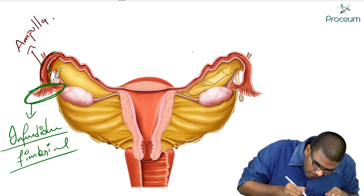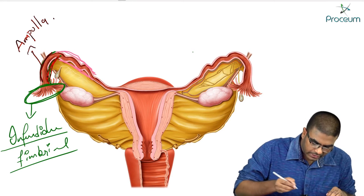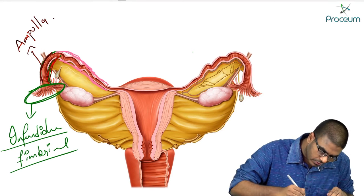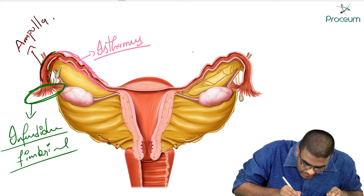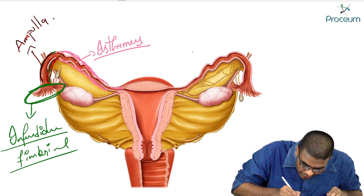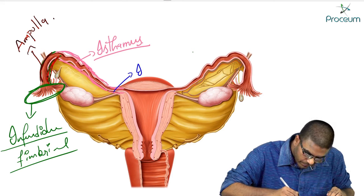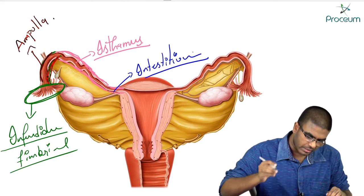Next, we have the next region — this part of the fallopian tube is known as the isthmus. And the part which goes into the uterus is known as the interstitium, or the interstitial part.